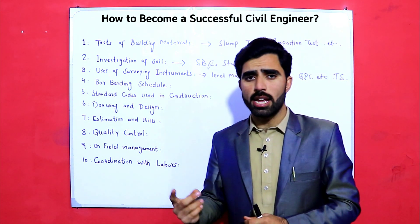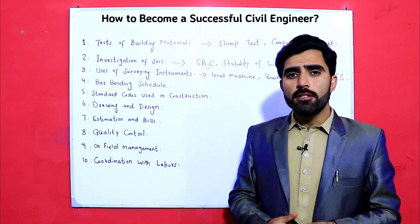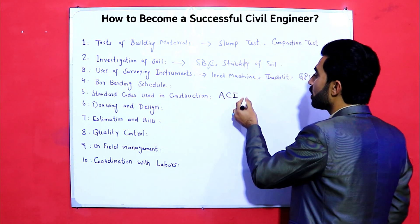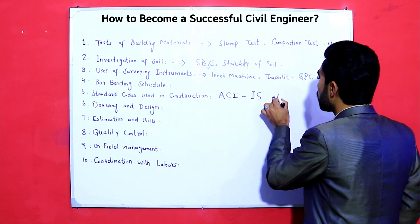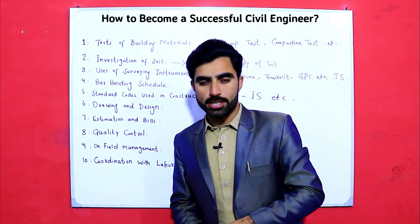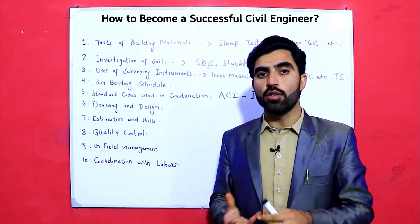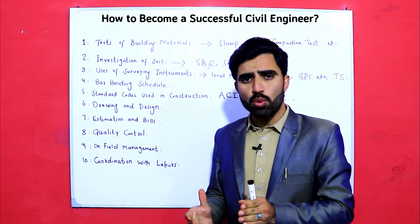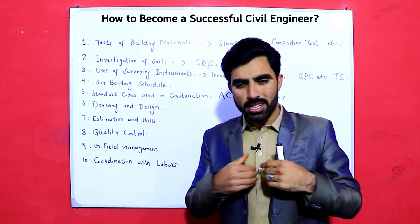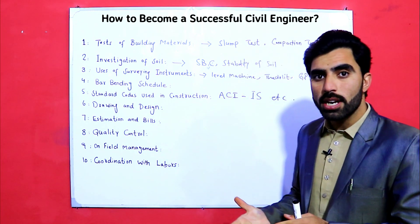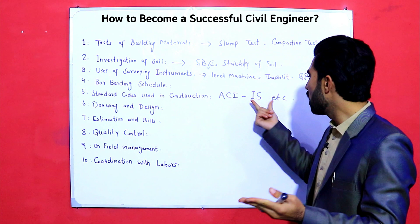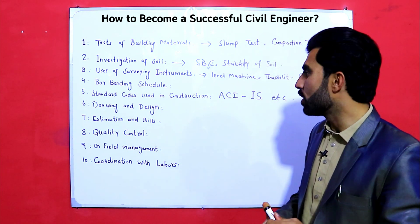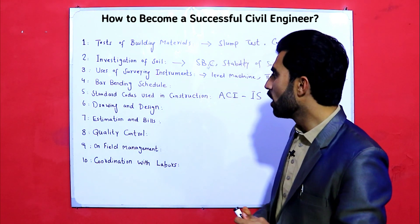The fifth requirement is standard codes used in construction. For different construction work — beams, columns, slabs, steel, concrete — there are standard codes such as ACI (American Concrete Institute) codes and IS (Indian Standard) codes. You should know the different codes for construction works and for different materials, especially for drawings, steel structures, cement, beams, columns, and slabs.